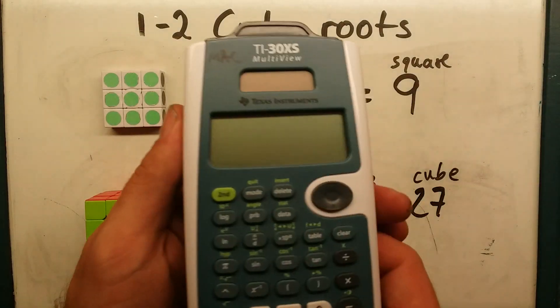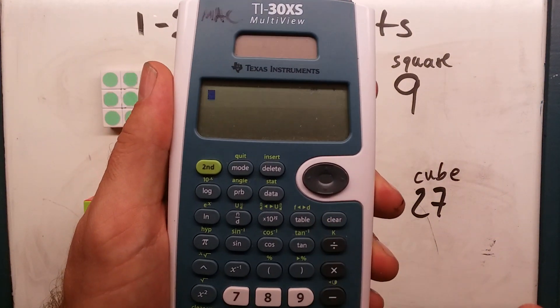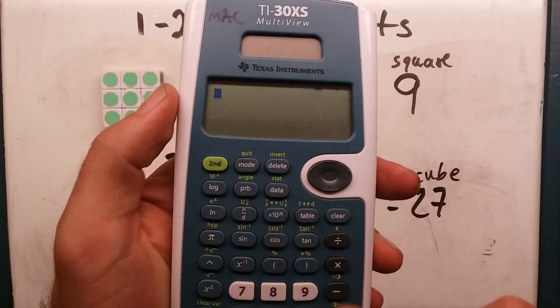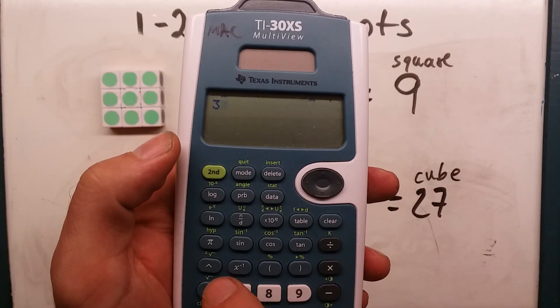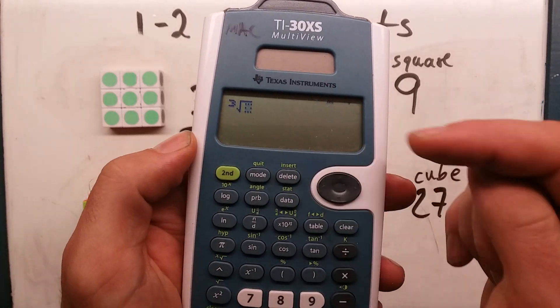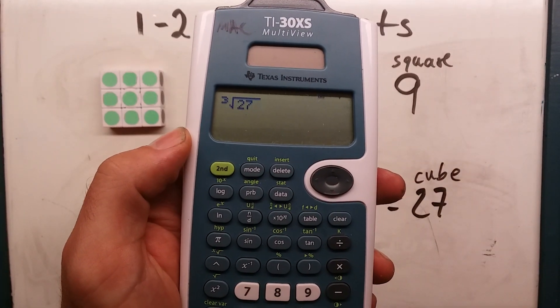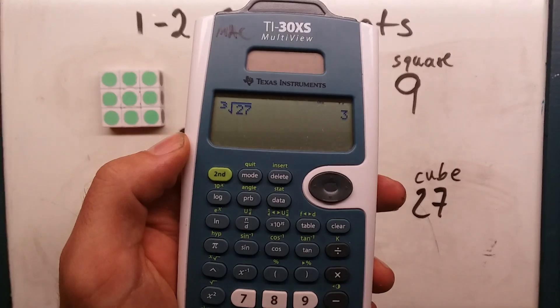On this calculator right here, same place. Clear that. So we do 3 second cube root. It shows me the cube root like this. 27, enter, I get 3.